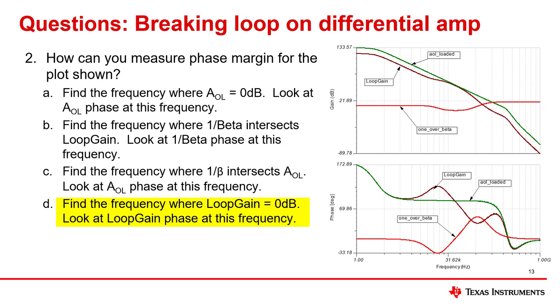The correct answer is D. Find the frequency where loop gain equals 0 dB. Look at loop gain phase at this frequency. In general, for stability you really only need the loop gain plot. The test is always done when loop gain equals 0 dB.